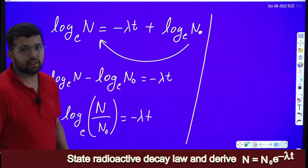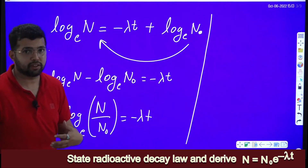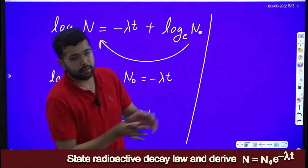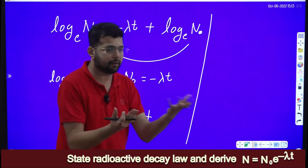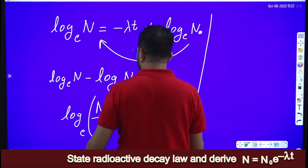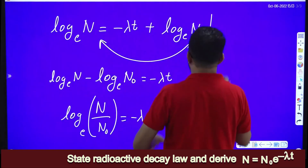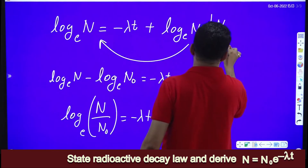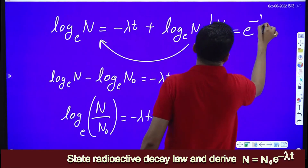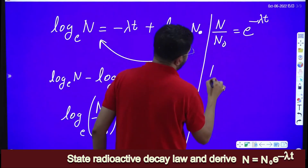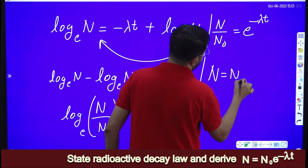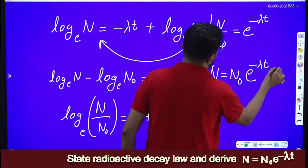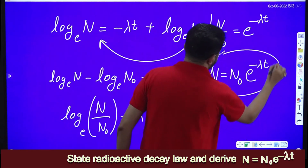We know that log and exponential are inverse functions. When a logarithmic function goes from LHS to RHS, it becomes an exponential function. So N/N naught is equal to e to the power minus lambda t, or on rearranging, N is equal to N naught into e to the power minus lambda t.